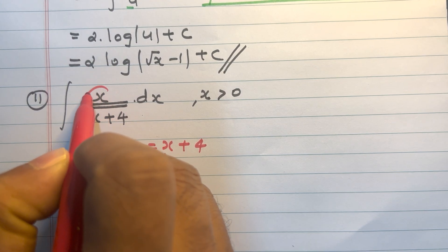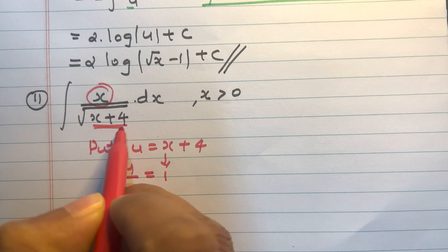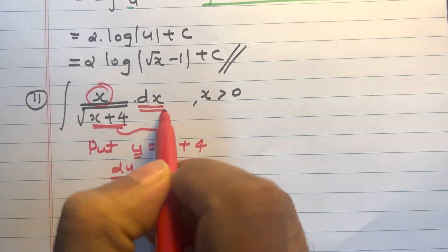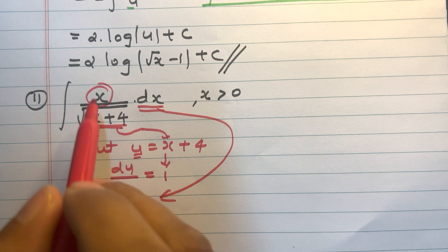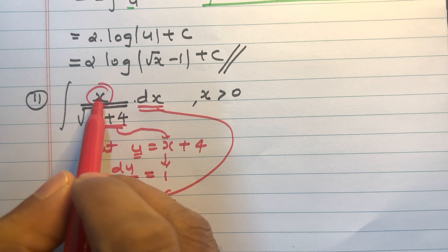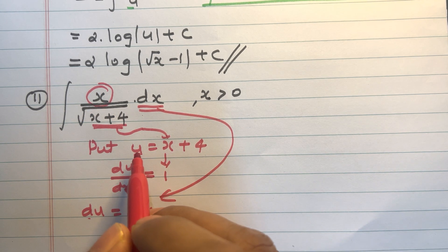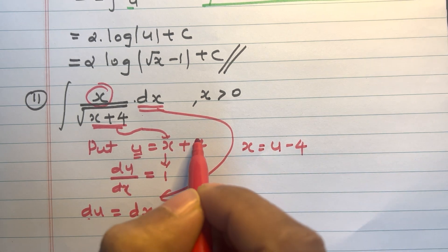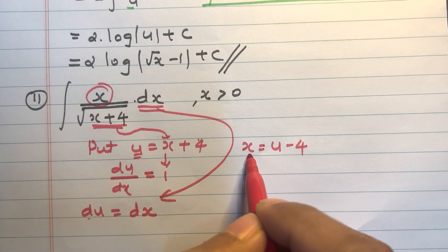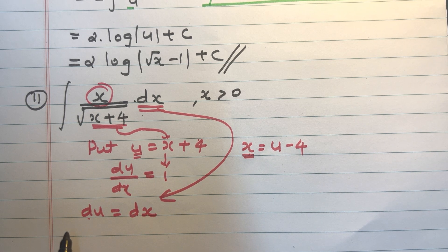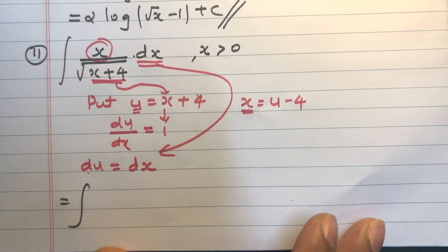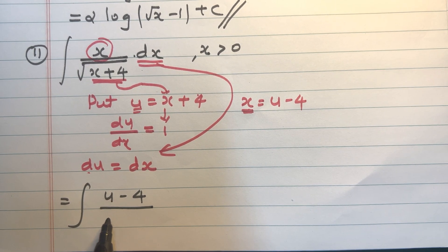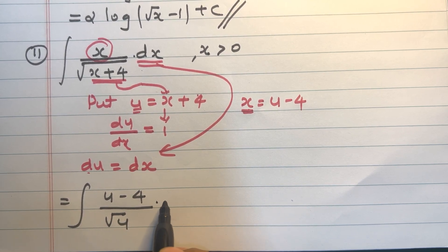We also need to substitute the value of x, since the only substitution so far is x plus 4 equals u and dx equals du. From u equals x plus 4, the value of x equals u minus 4. So the integration becomes integral of (u minus 4) divided by root u into du.